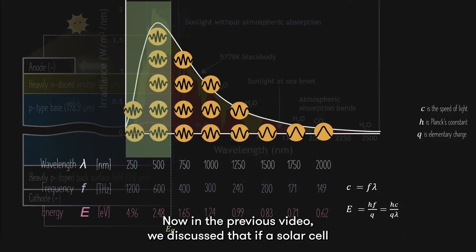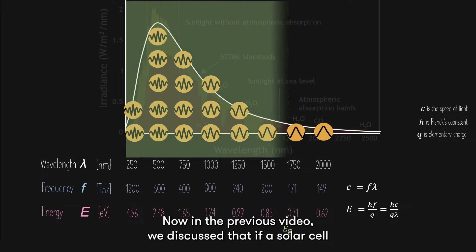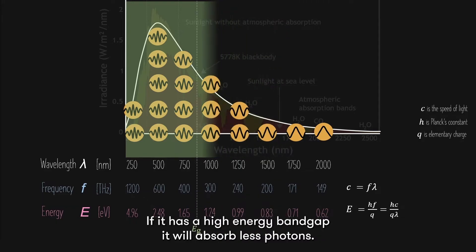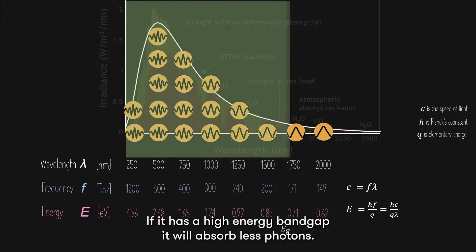Now in the previous video, we discussed that if a solar cell has a low energy band gap, it will absorb the most amount of photons. If it has a high energy band gap, it will absorb less photons.